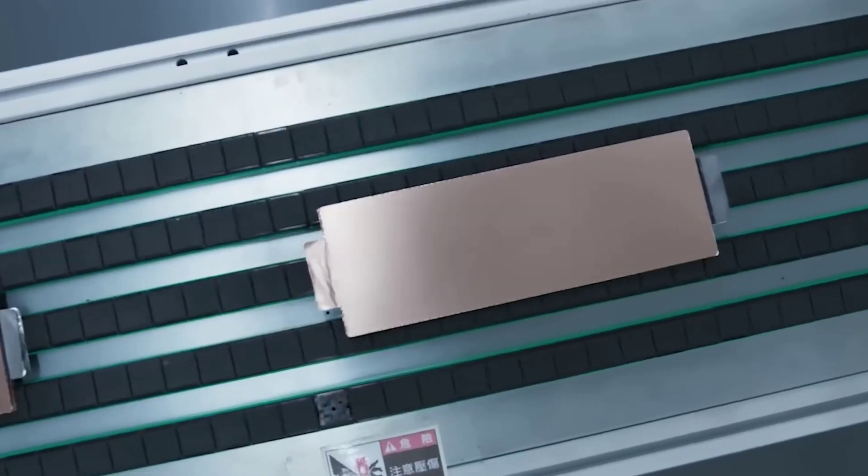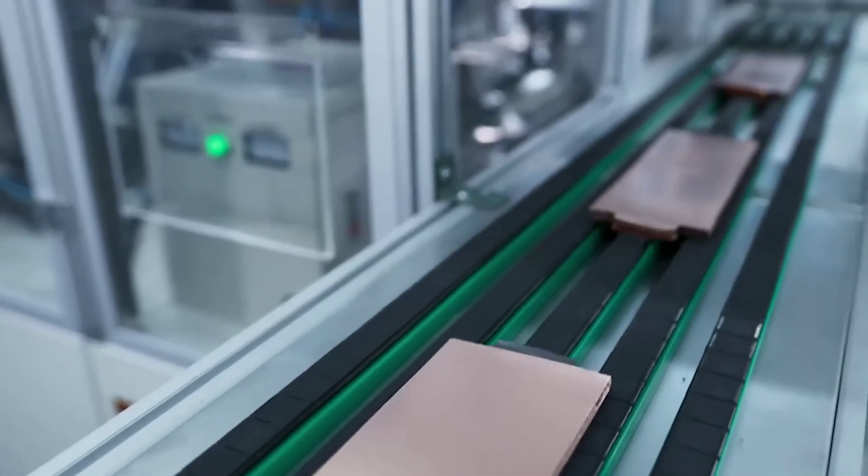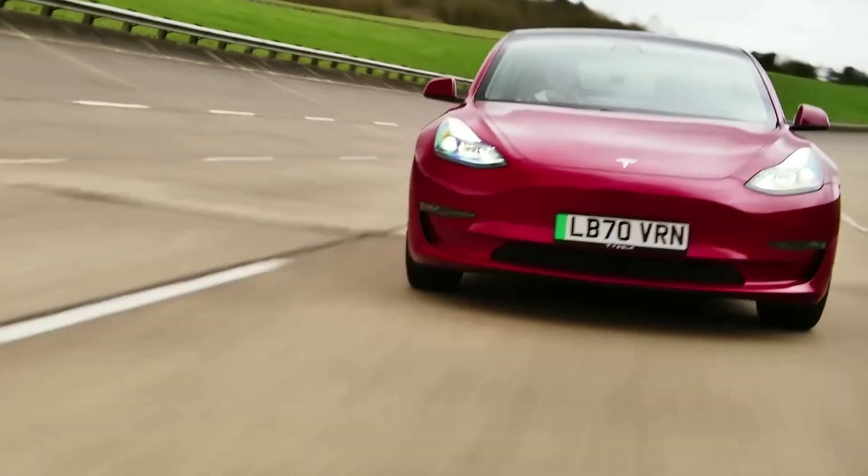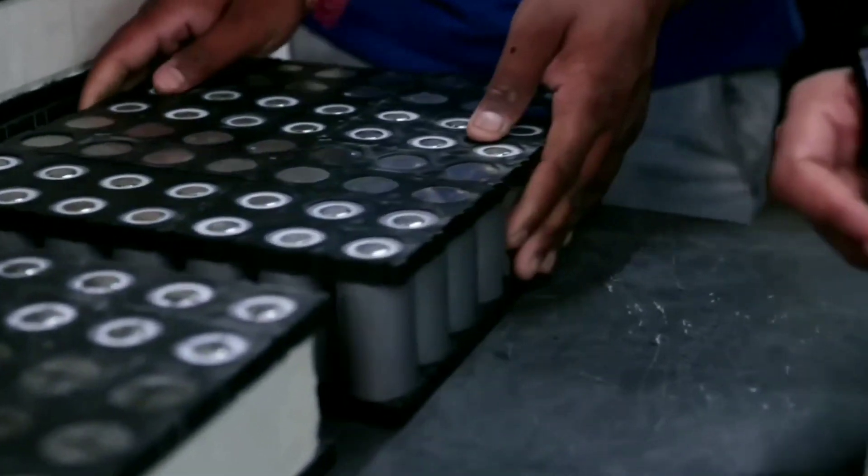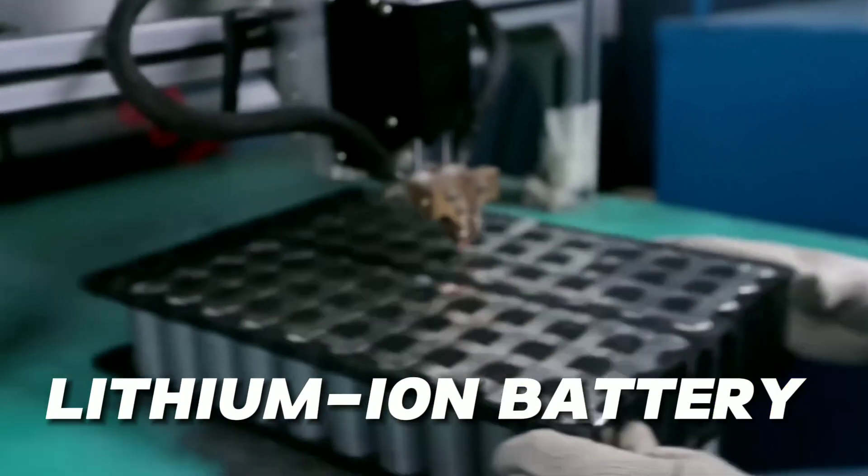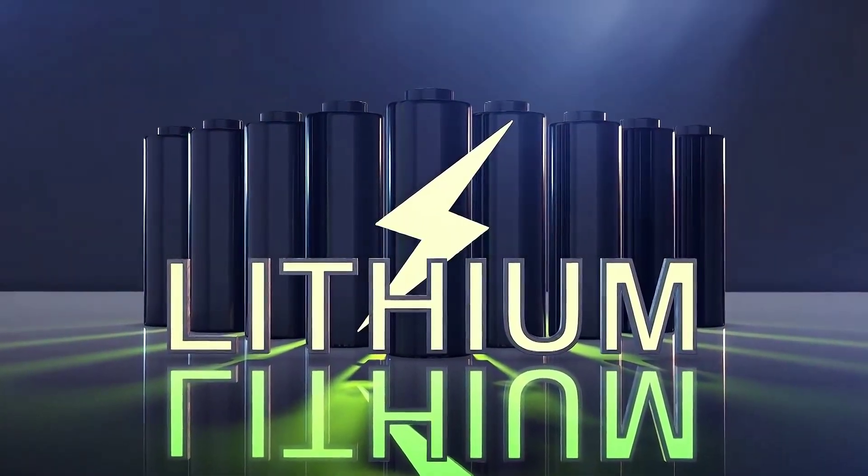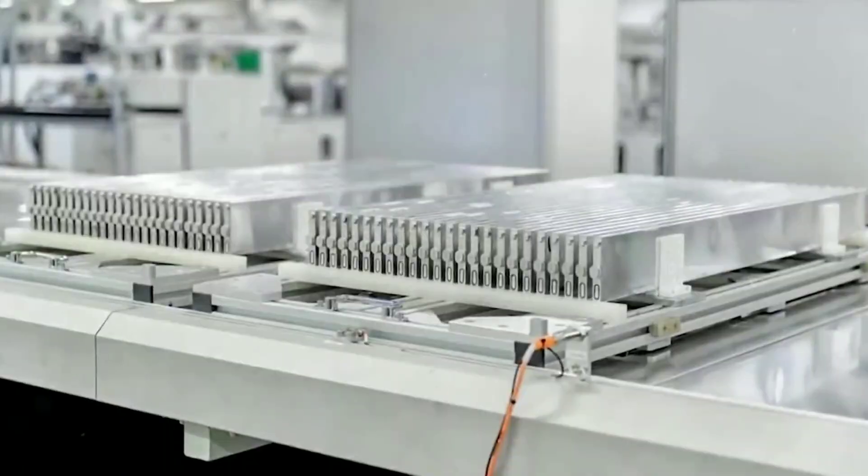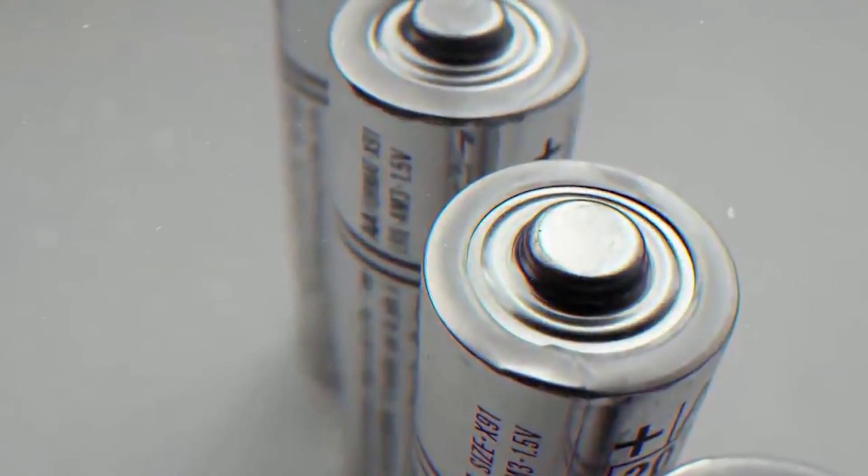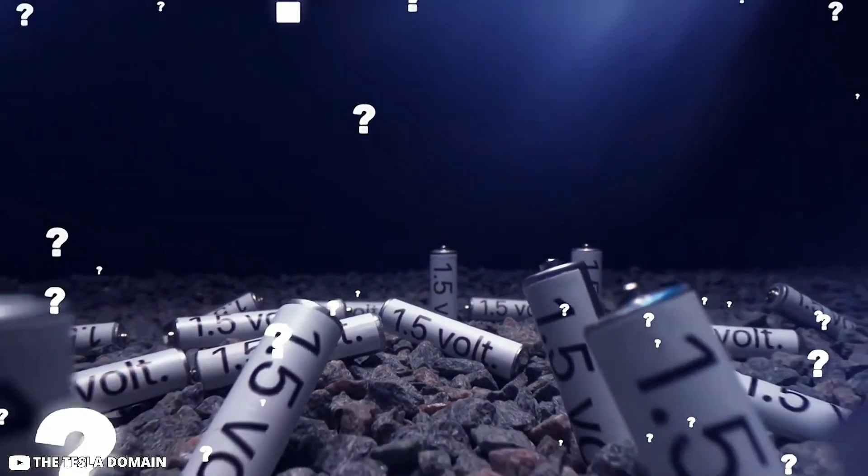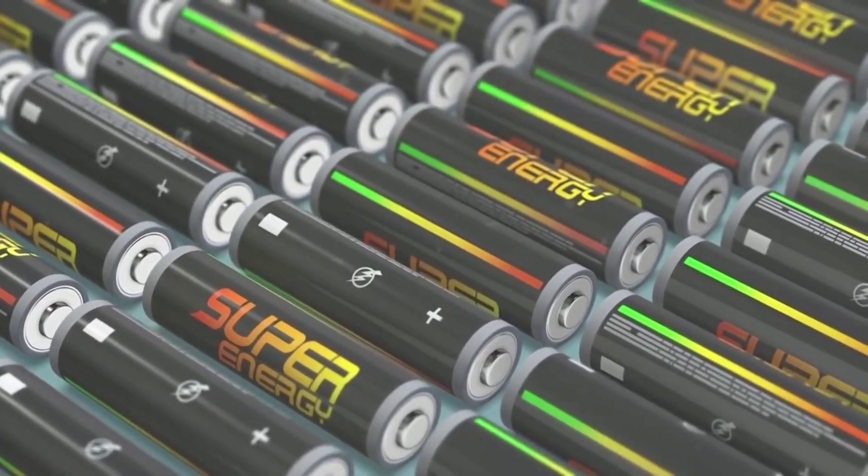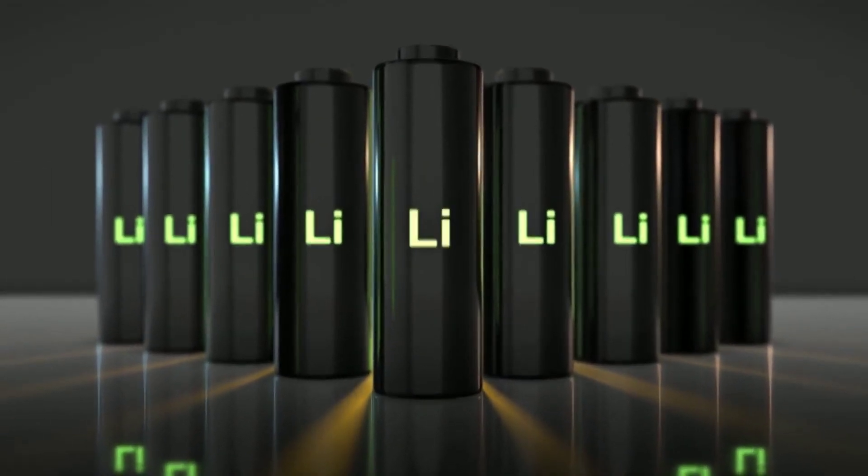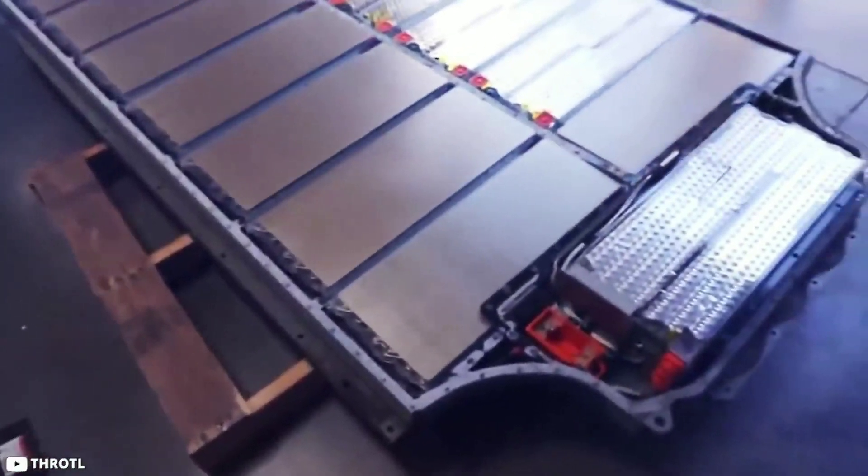The battery is the heart of any EV. It stores the energy that powers the electric motor and determines how far, how fast, and how long an EV can run. The most common type of battery used in EVs today is the lithium-ion battery, which was invented in the 1970s and commercialized in the 1990s. Lithium-ion batteries have many advantages. They are lightweight, compact, rechargeable, and have high energy density. Energy density is a measure of how much energy a battery can store per unit of weight or volume. The higher the energy density, the more range and performance an EV can achieve with a given battery size and weight.